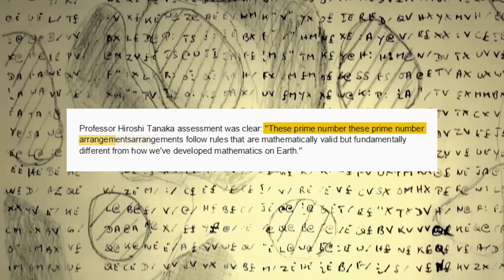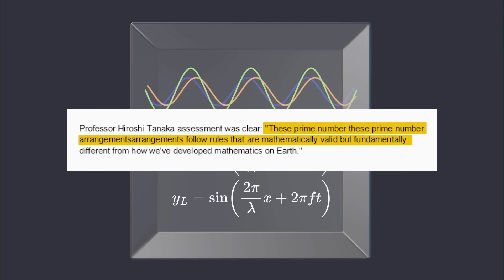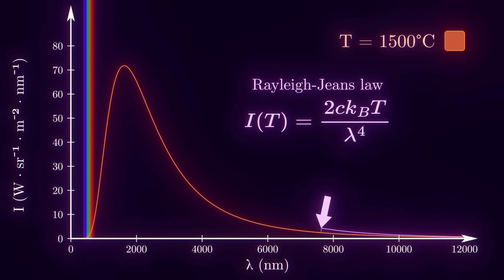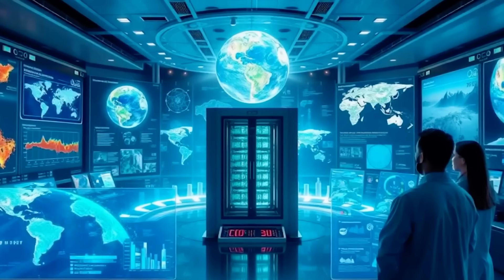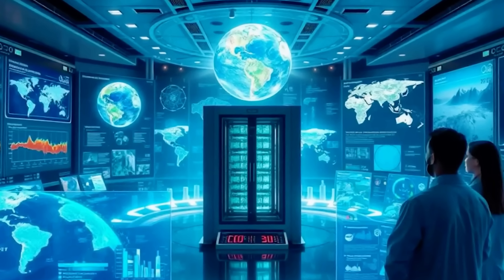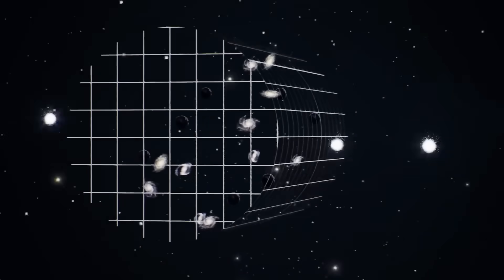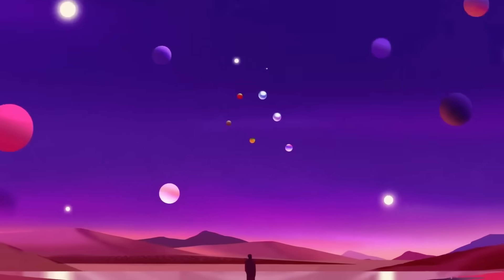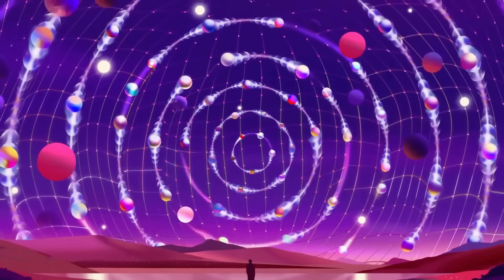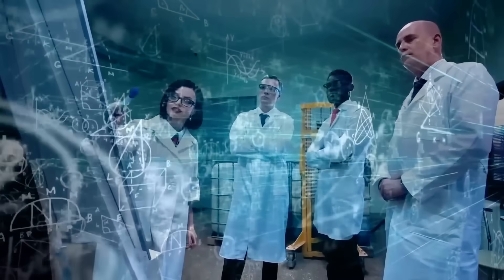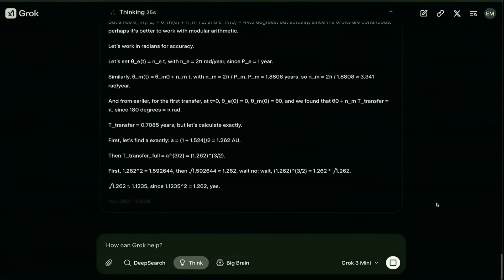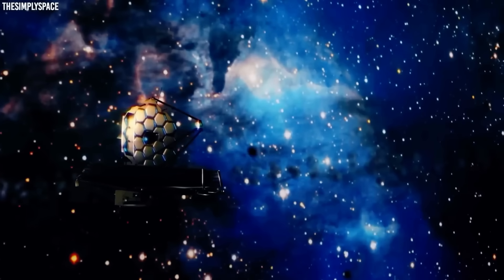These prime number arrangements follow rules that are mathematically valid, but fundamentally different from how we've developed mathematics on Earth. The second element was even more perplexing. Geometric spiral patterns encoded across quantum states. Not just in three dimensions, but in quantum superpositions that could only be properly visualized in multidimensional space. These weren't random formations. They showed an intricate structure that repeated with perfect precision across different sections of the data. The spirals followed a golden ratio-like progression, but with subtle variations that couldn't be explained by any known natural phenomenon.